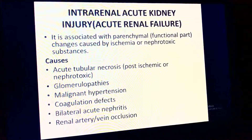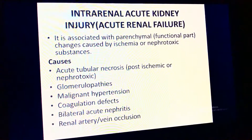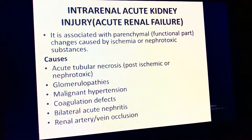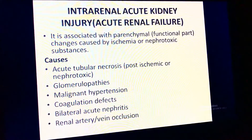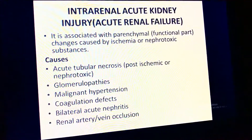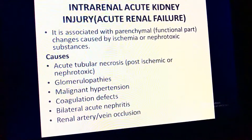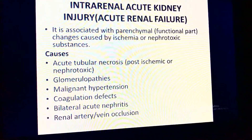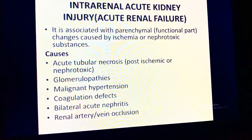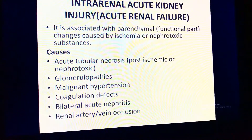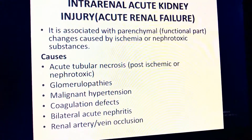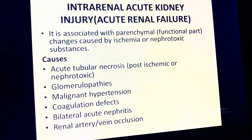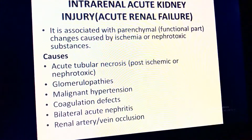Intra-renal acute kidney injury is associated with parenchymal functional changes caused by ischemia or nephrotoxic substances. Causes include acute tubular necrosis, glomerulopathies, malignant hypertension, coagulation defects, bilateral acute nephritis, and renal artery or vein occlusions. These are internal or intrinsic renal causes.